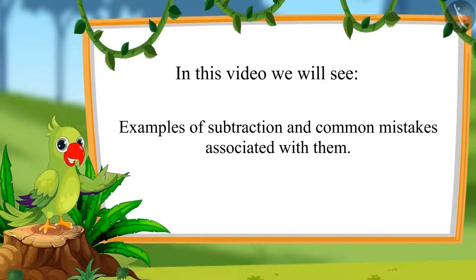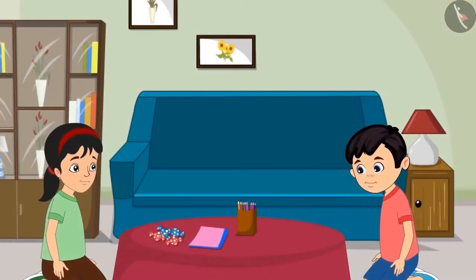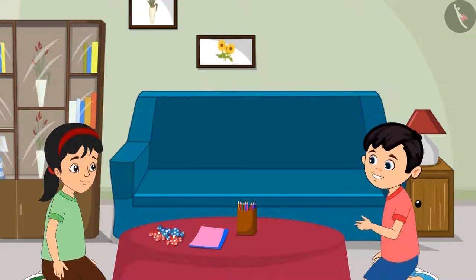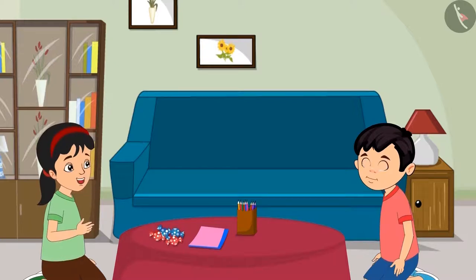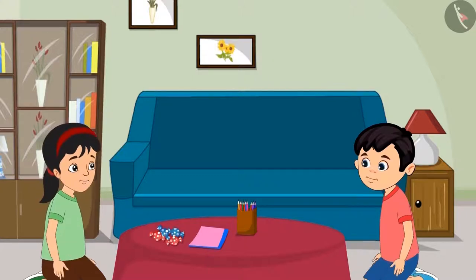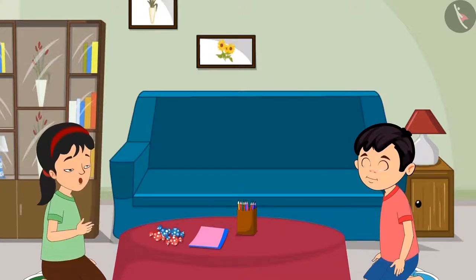Today is Sunday and tomorrow is auntie's birthday — she is Chotu and Pinky's friend. Pinky has brought four toffees for auntie. Chotu asks for one, but Pinky says no: these four toffees are for auntie, she can't give even one, and she will get more toffees for Chotu tomorrow.